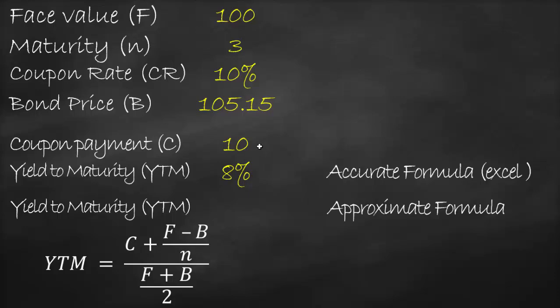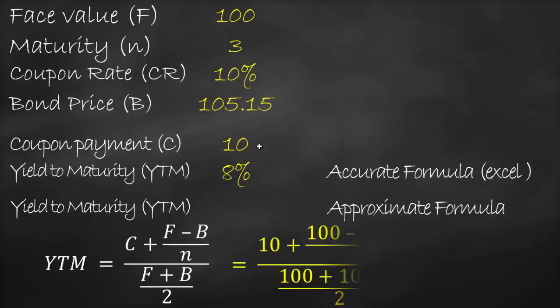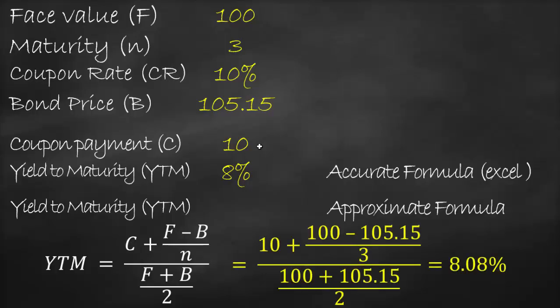Substituting our values: coupon payment of 10 plus (face value of 100 minus bond price of 105.15) divided by maturity of 3, all divided by (face value of 100 plus bond price of 105.15) divided by 2.